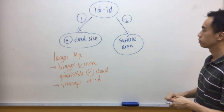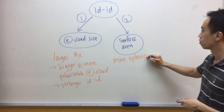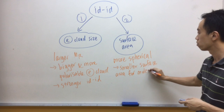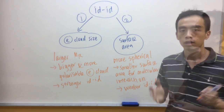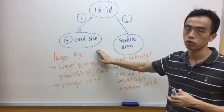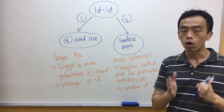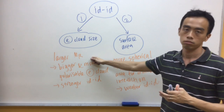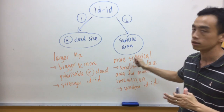One final and important note when comparing the two factors: the first factor, which is the electron cloud size, is more important than the surface area. So when there's a difference in the electron cloud size, you always look at the difference in electron cloud size. Only when MR is the same — so you cannot differentiate by comparing electron cloud size — only then do you look at the surface area.